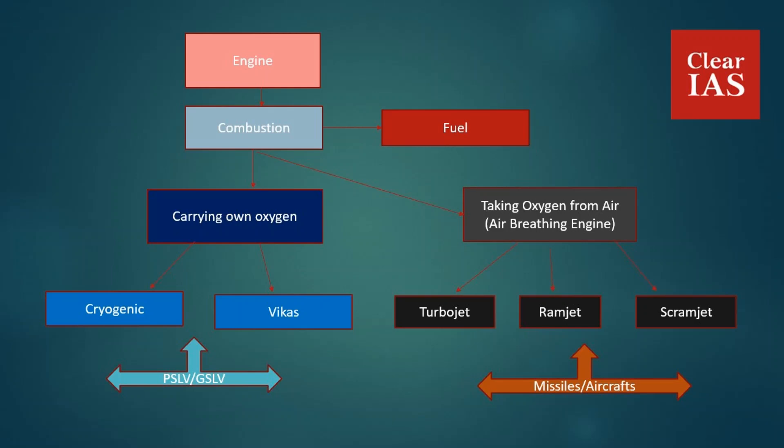Just like in normal breathing we take air from the atmosphere, aircraft can also take oxygen from the air. If you are extracting oxygen from the air, those missiles or engines are called air-breathing engines. There are many types of such engines, but we will cover three: turbojet, ramjet, and scramjet. These three engines take atmospheric oxygen from the incoming air.